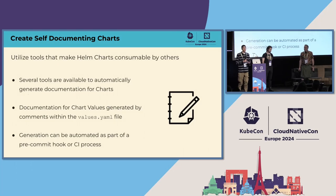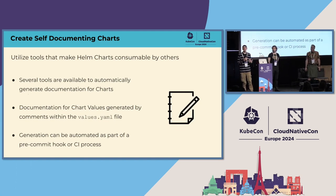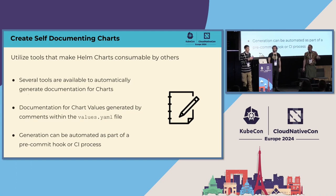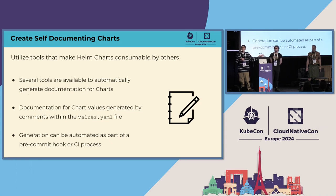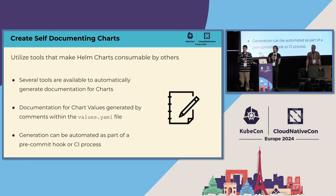Definitely utilize tools for self-documentation. As creators, I can't tell you how much pain I had trying to populate a README to make my values consumable. How many of you have experienced that challenge? There are tools that can help — adding comments into your values.yaml file will allow those tools to render the README automatically, as part of a pre-commit hook or CI. You can really start taking advantage of available tools to make chart creation much easier.